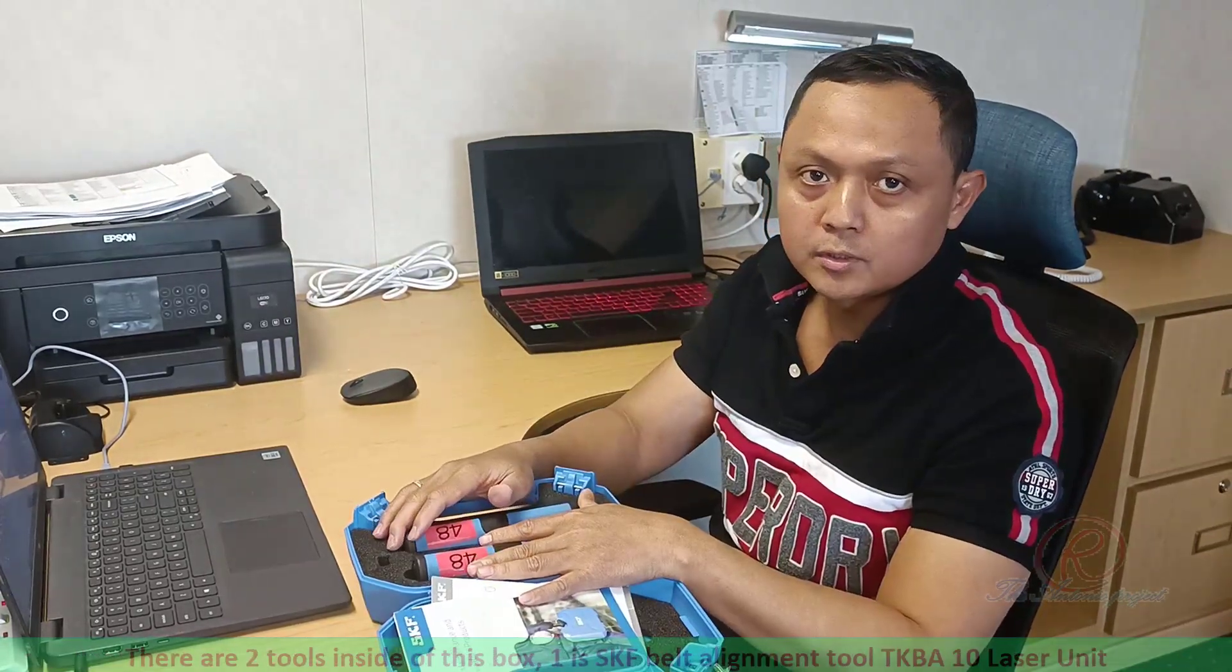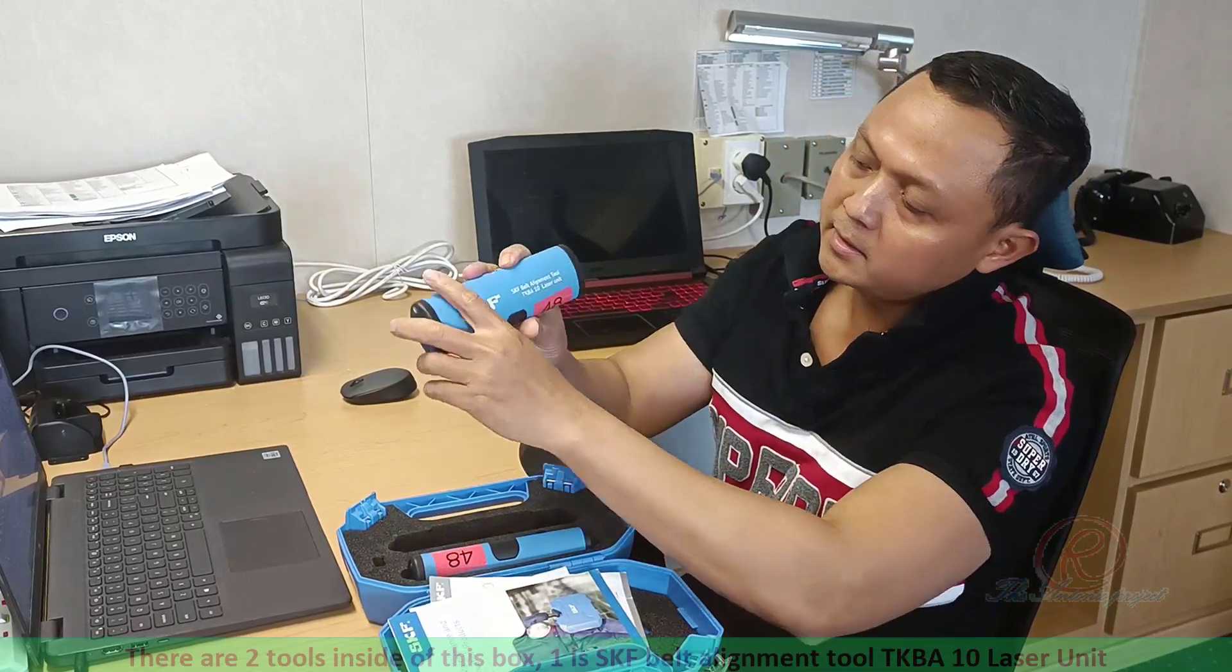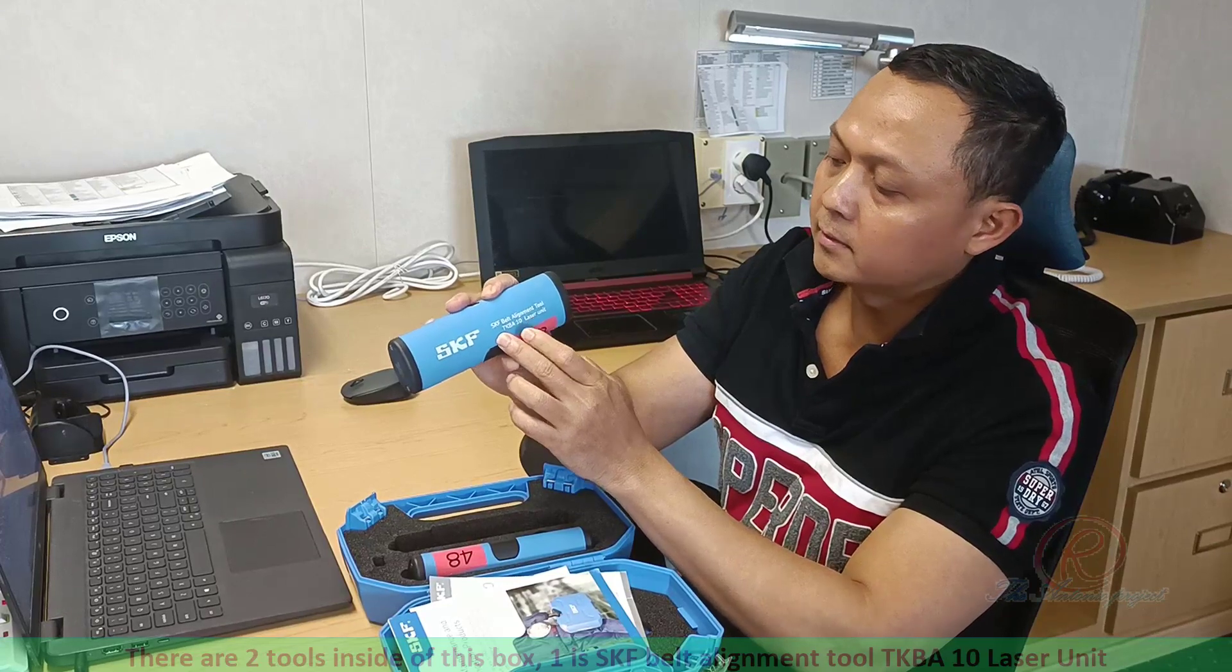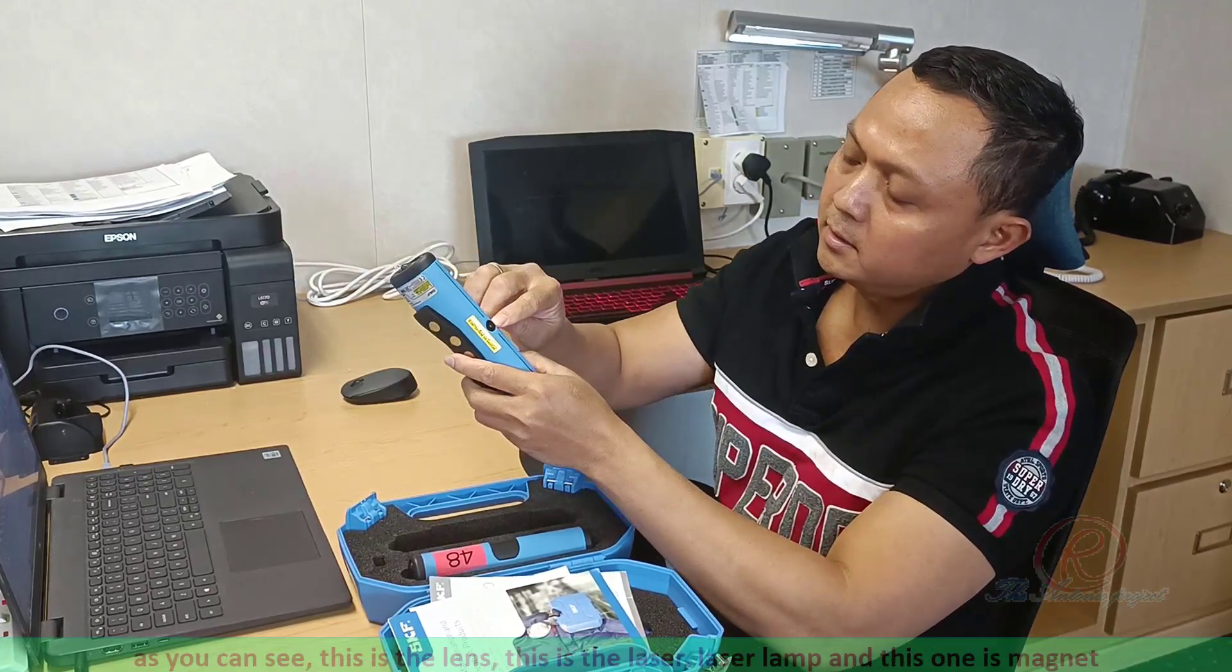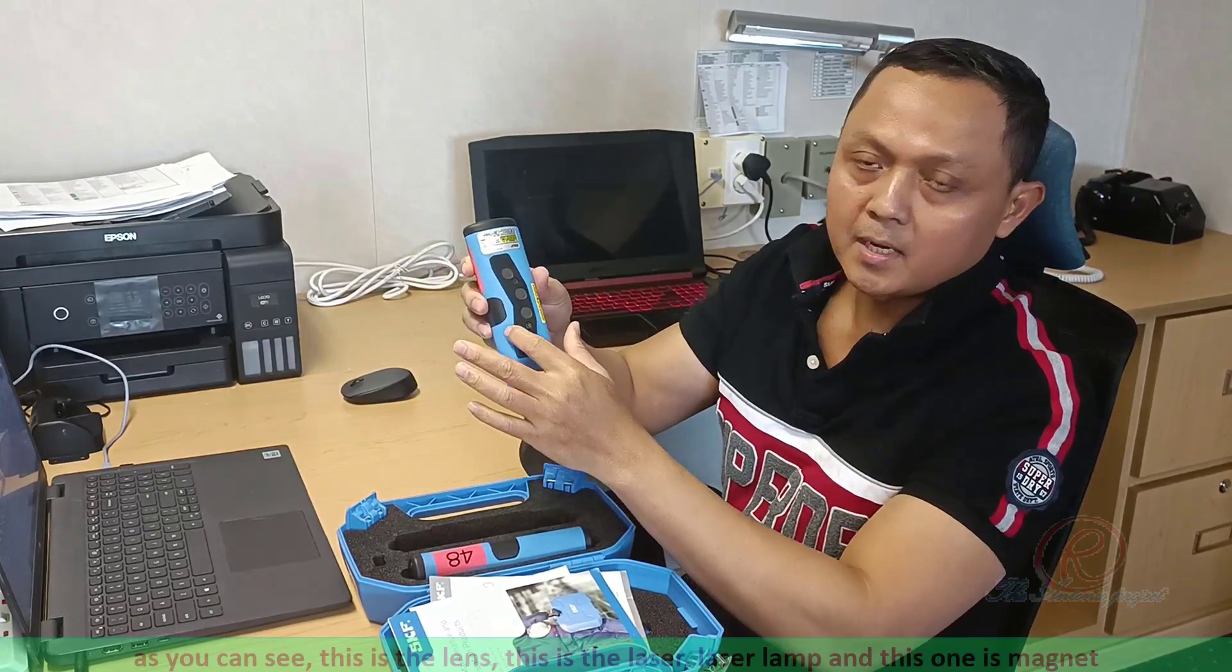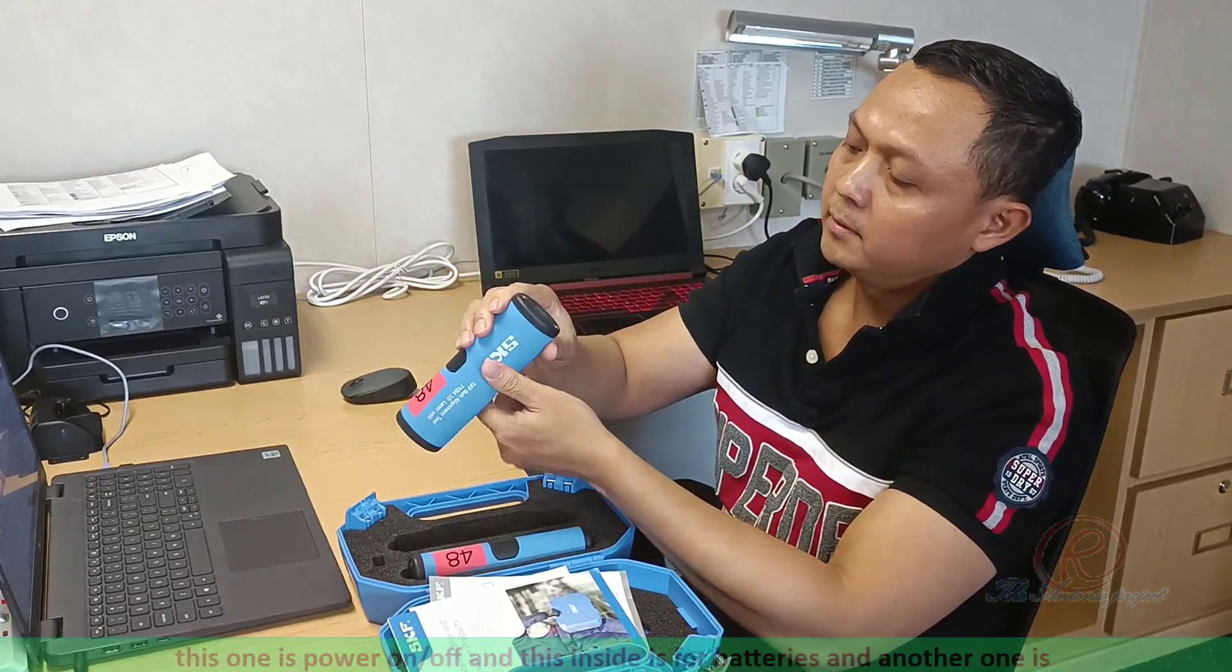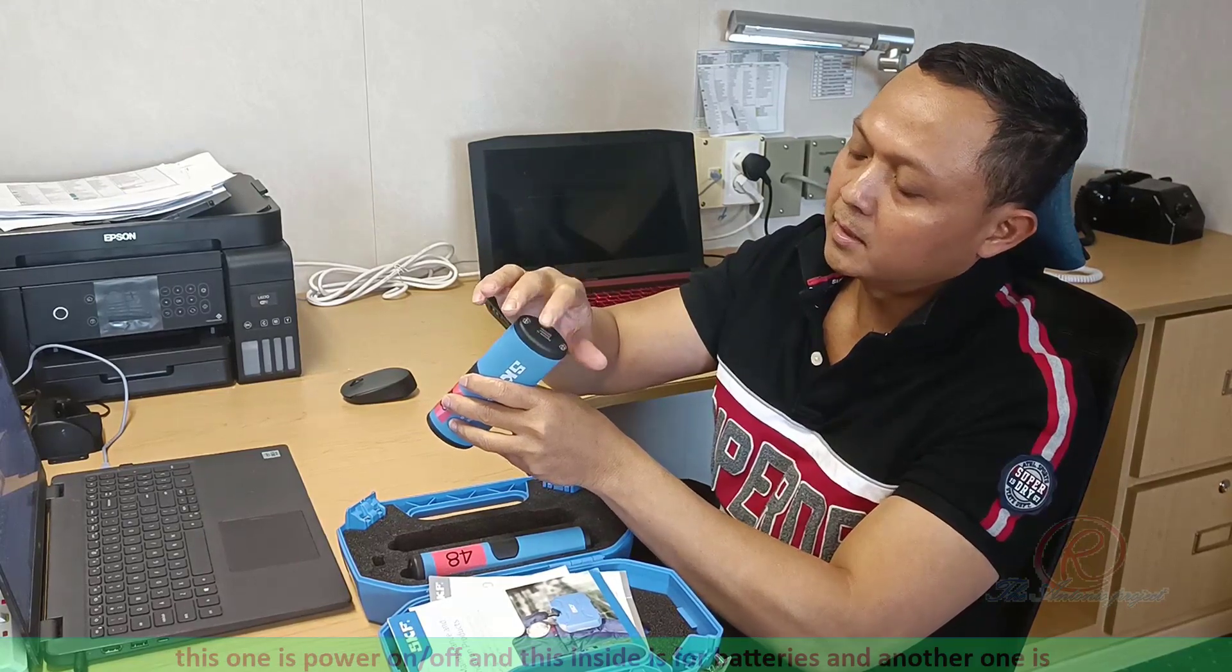There are tools inside of this box. One is SKF Belt Alignment Tool TGB E10 Laser Unit. As you can see, this is the lens, this is the laser, laser lamp. And this one is magnet. This one is power on off, and this inside is for battery.